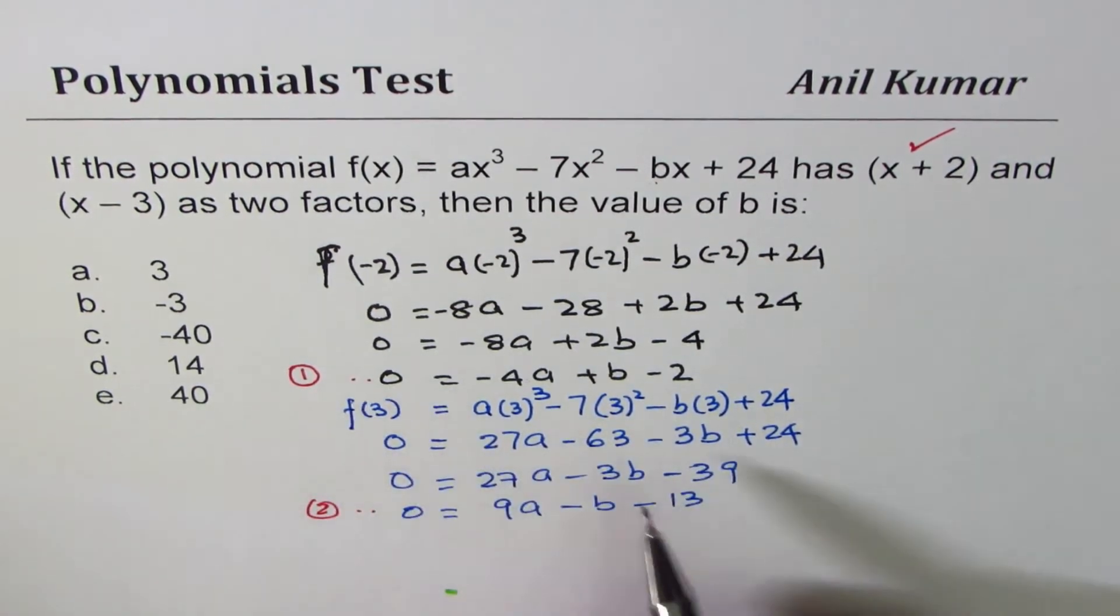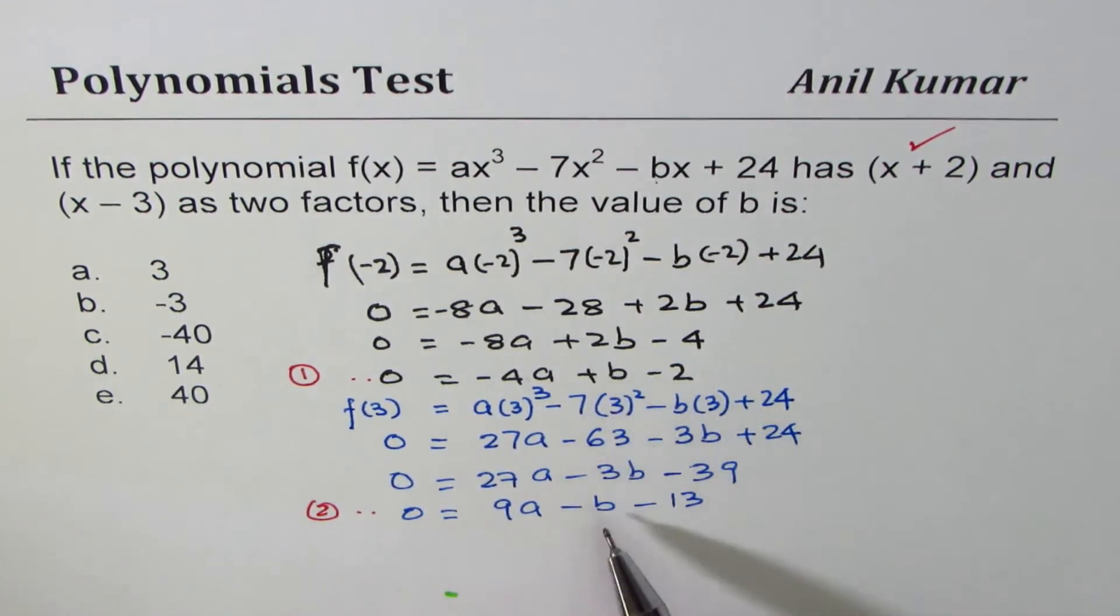We'll call this as equation number 2, right? So, we have two equations and two variables. If I add these two equations, I can eliminate b and find a, right?